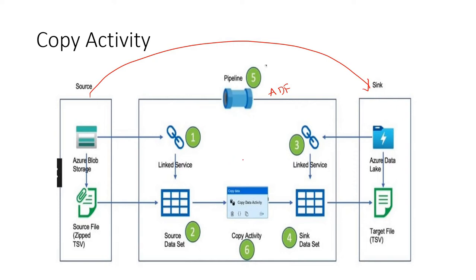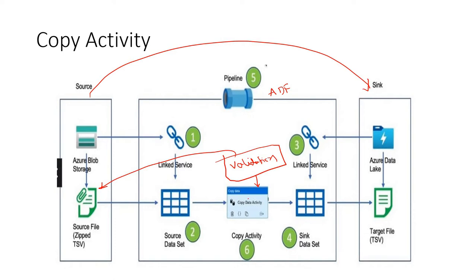To check whether the file is available or not in Azure Data Factory, there is an activity called Validation. That Validation activity is connected with the Copy activity. Whenever we run the pipeline, it first runs the Validation, which checks with Blob Storage if the file is available. If the file is available, it signals the Copy activity to perform its operation; otherwise, if the file is not available within a certain period, it shows a timeout.